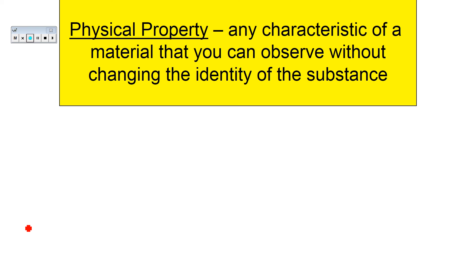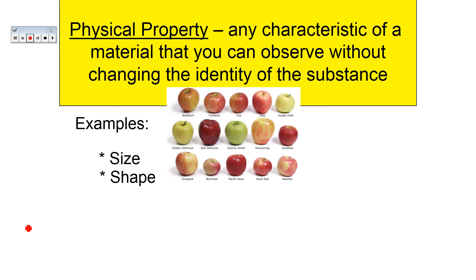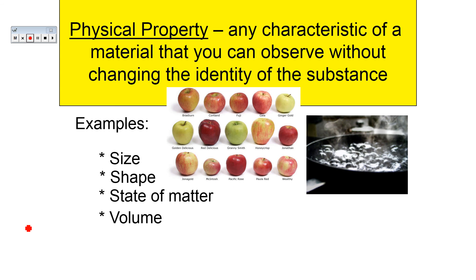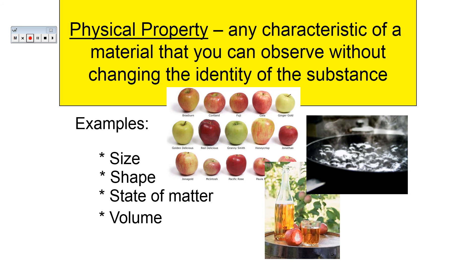A physical property is any characteristic of a material that you can observe without changing the identity of the substance. For example, size, shape, state of matter, and volume are examples of physical properties. These are things that are characteristic of a material, but changing them doesn't change the identity of the substance.